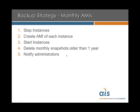Last but not least is the monthly AMI. It's similar to the weekly, except it runs every month and creates an AMI. It'll stop each instance, create an AMI of each instance, then start each instance, and delete any monthly snapshots older than one year. That way we'll have five days, four weeks, or one year available to restore from — there's probably a good chance we wouldn't need anything that old, but just in case. It'll also notify administrators of any errors that may have occurred or if the backup was a success.